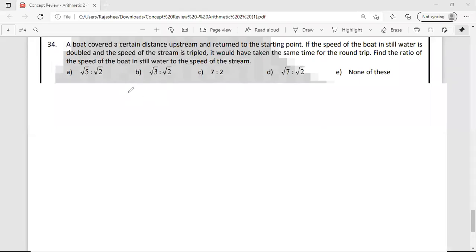Let us assume speed of boat is B and speed of stream is S. Initially, the distance is D.